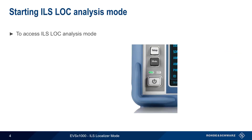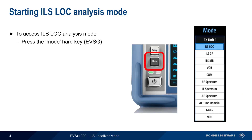To access ILS localizer analysis mode on the EVS1000, simply press the MODE hard key on the front of the instrument and select ILS Localizer. If operating the EVS over VNC, press M, and then use the down arrow to scroll through the list of available analysis modes.